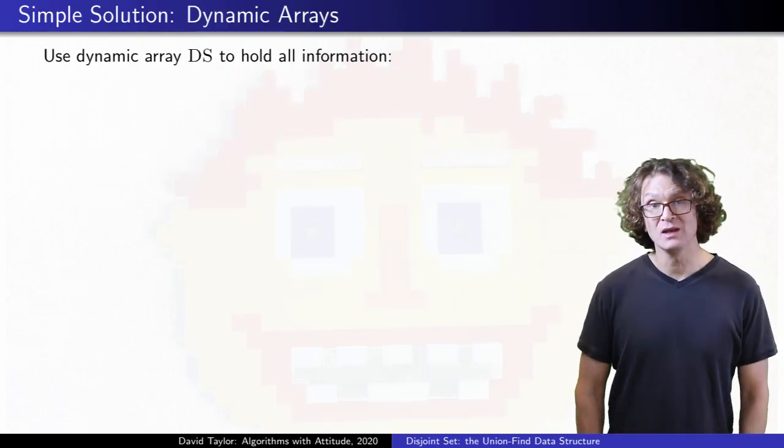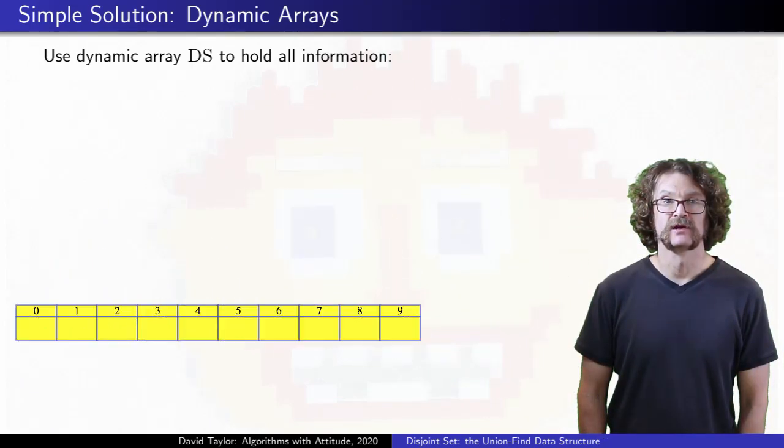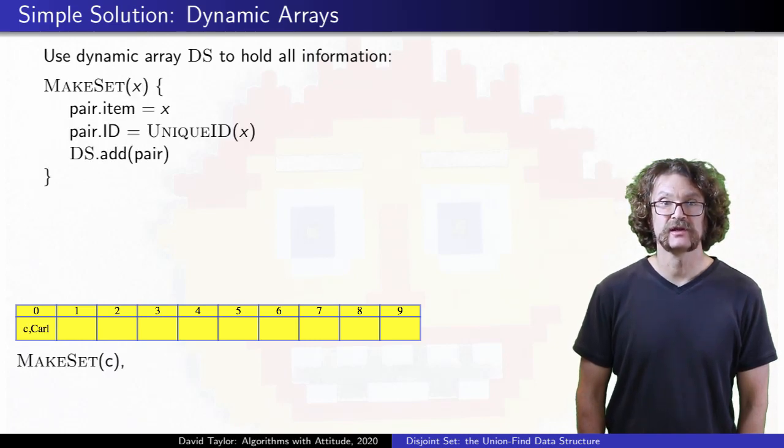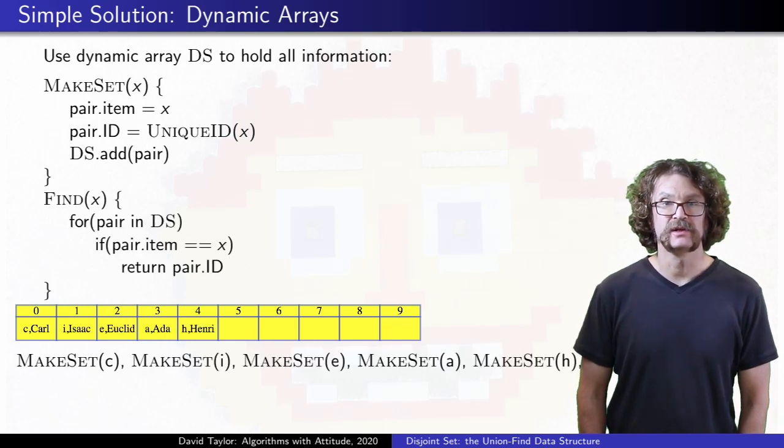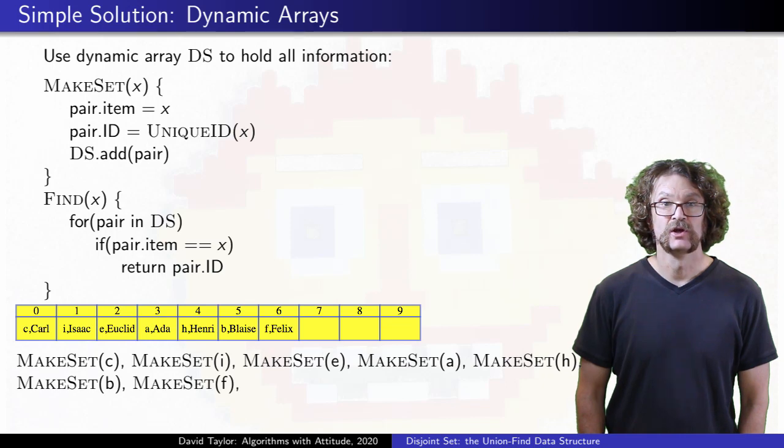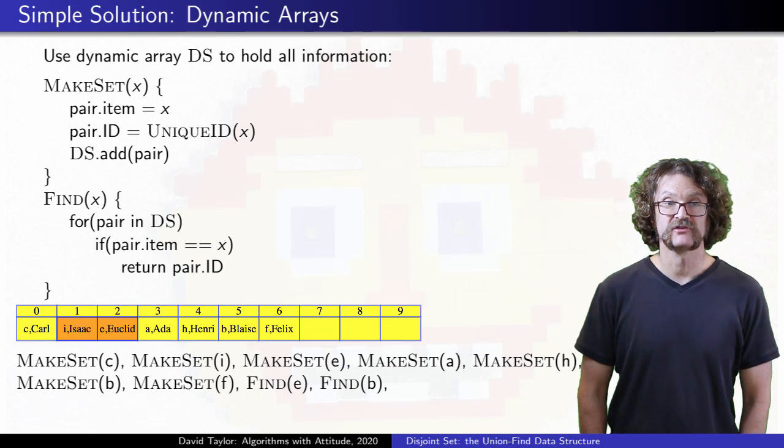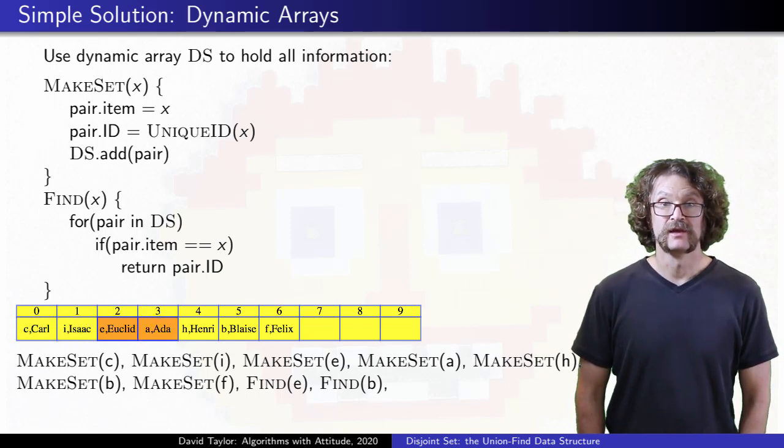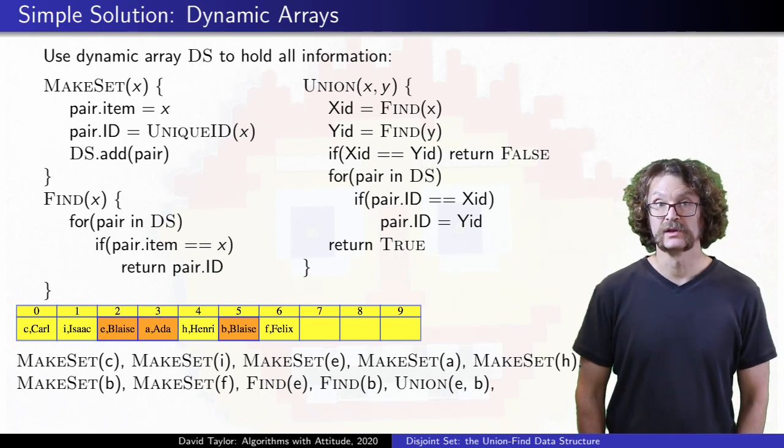First, come up with any way to solve the problem. You can use a dynamic array. I made mine big enough that it won't need to resize. If you want to make some new set with some object, just stick it into your array, along with a unique set ID for it. If you want to find out if object B is in the same set as object E, you'll walk through the set to find E, walk through the set to find B, and if they don't have the same ID, they aren't in the same set. If they are in different sets, to take their union, walk through the entire array, changing all of the objects with E's ID to have B's ID. Really simple, really slow.